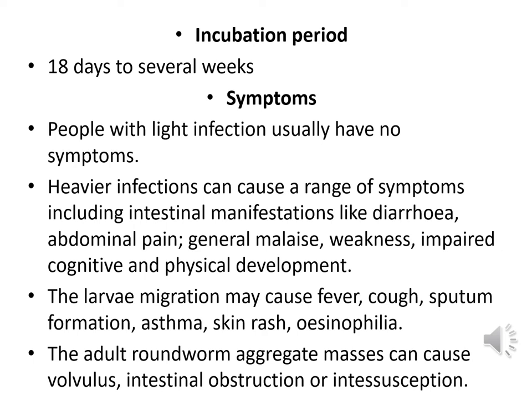The incubation period of the disease varies from 18 days to several weeks. People with light infection usually have no symptoms. However, heavier infections can cause a range of symptoms including intestinal manifestations like diarrhea, abdominal pain, general malaise, weakness, and impaired cognition and physical development. Larval migration may cause fever, cough, sputum formation, asthma, skin rash, and eosinophilia. Adult roundworm aggregate masses can cause volvulus, intestinal obstruction, or intussusception.